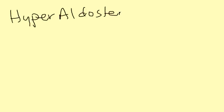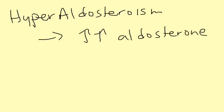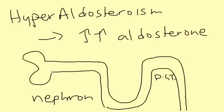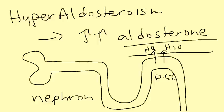Hyperaldosteronism means you have a lot of aldosterone, which comes from the zona glomerulosa of the adrenal gland. Aldosterone works on the nephron of the kidney, specifically the distal convoluted tubule, bringing sodium and water back into the bloodstream. When you bring back a lot of water and sodium into the bloodstream, you increase blood pressure.